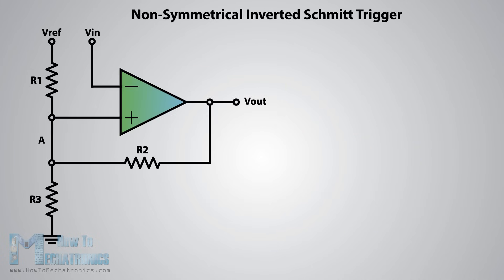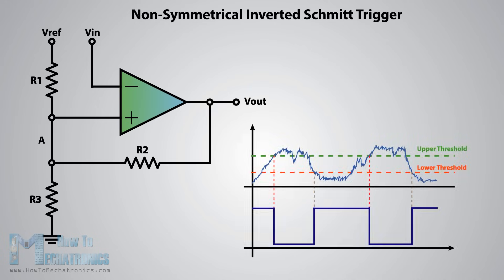In order to get two different non-symmetrical thresholds, we can use this circuit of an inverting single-powered Schmitt trigger. Here the VREF voltage is the same as the VCC of the op-amp. Because the VIN input is connected to the inverting input of the op-amp, when its value reaches the upper threshold the output will switch off to 0 volts, and when its value declines to the lower threshold the output will switch on to 5 volts.